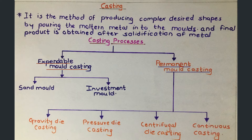The second type is permanent mold casting. In permanent mold casting, the molds can be used many times to produce the component, and the mold material is metals.